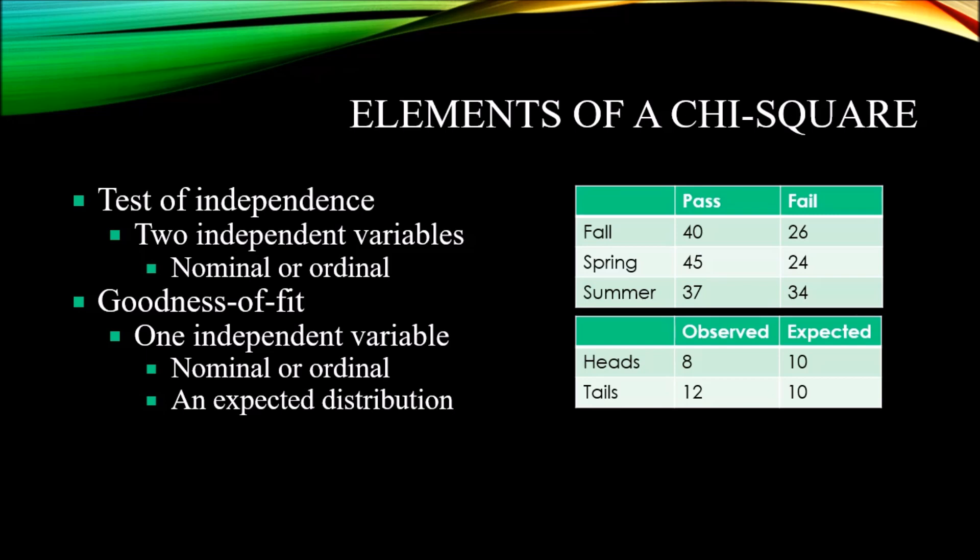With the goodness of fit, you have one independent variable, again at the nominal or ordinal level of measurement, and you compare this independent variable to an expected distribution. We oftentimes see the goodness of fit when we're working with some sort of known probability. In this example here to the right, I have heads and tails—a coin toss. You had 8 times where you had heads, 12 times where you had tails, and of course the expected distribution would be equal. There's a 50-50 chance for any particular observation, so for both the heads and tails categories, you would expect 10.